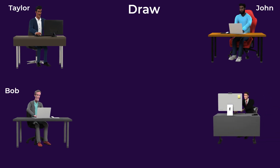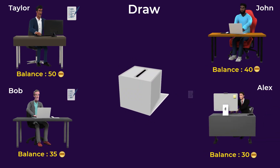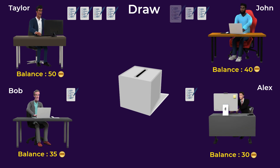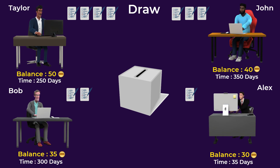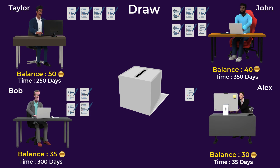You can think of it like a draw. For example, we will choose a validator between Taylor, John, Bob, and Alex. Each one of them has only one entry to the draw at first. Taylor has the highest amount of crypto staked, so his chances increase by giving him three additional entries, two additional entries for John, one for Bob, and nothing for Alex, as he has the smallest amount of crypto staked. Now we need to consider for how long they have been staking their crypto. John has staked for the longest time, so he gets an additional three entries, two for Bob, and one for Taylor.